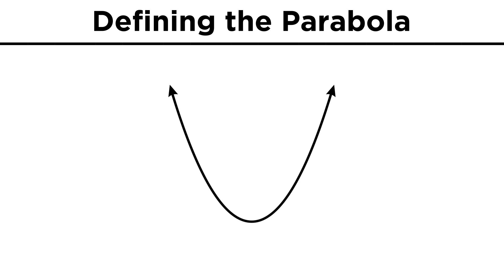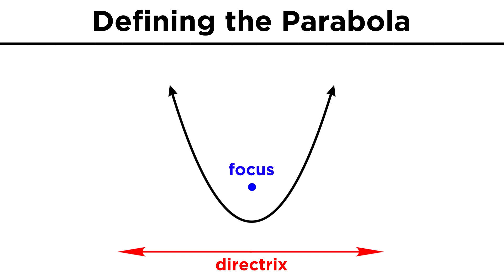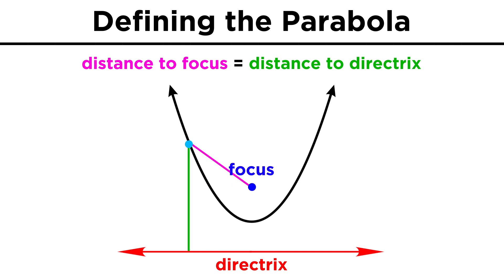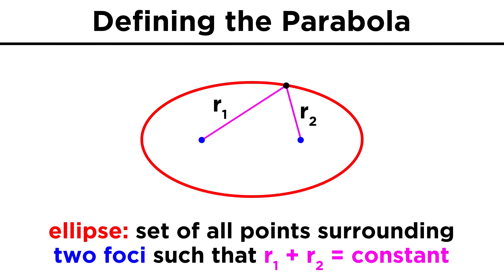A parabola is the set of all points that are equidistant from a fixed point, called the focus, and a fixed line, called the directrix. In other words, any point on this curve will be just as far from the focus as it is from the directrix at its closest point. This is different from something like an ellipse, where it's the sum of the distances from the two foci that remains constant.